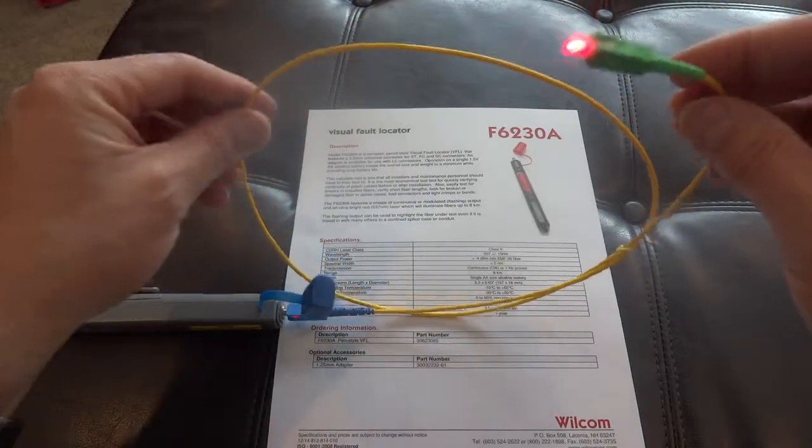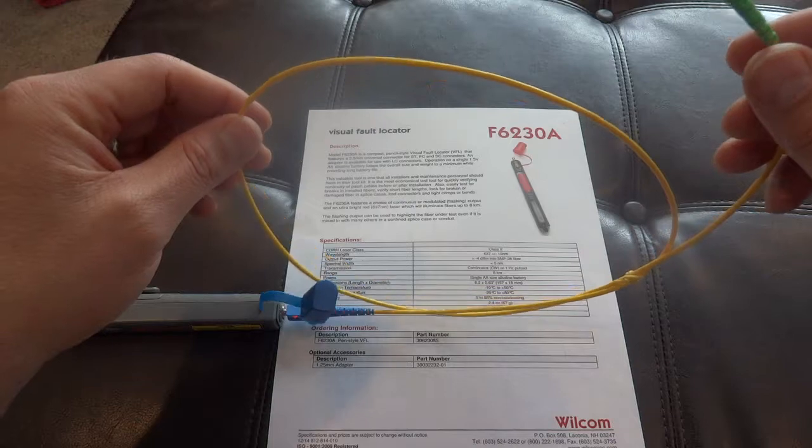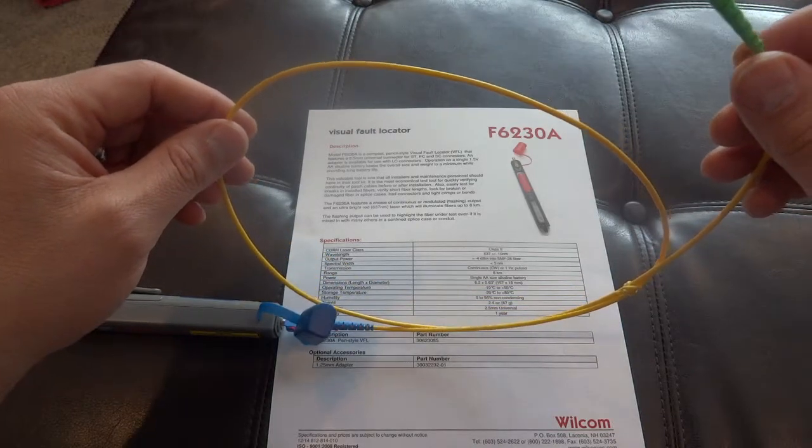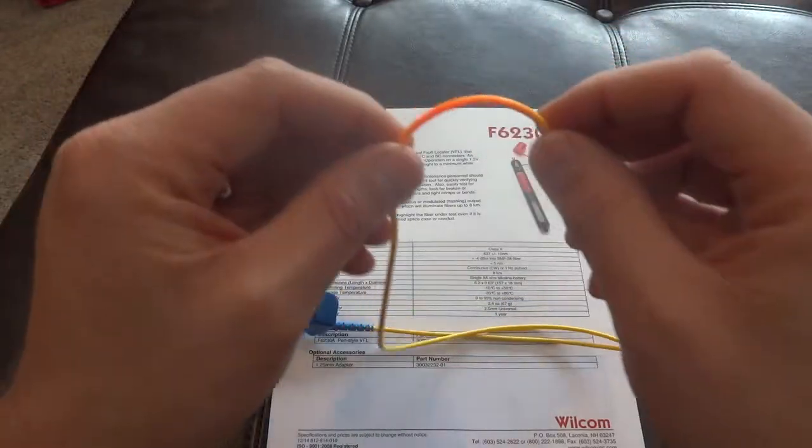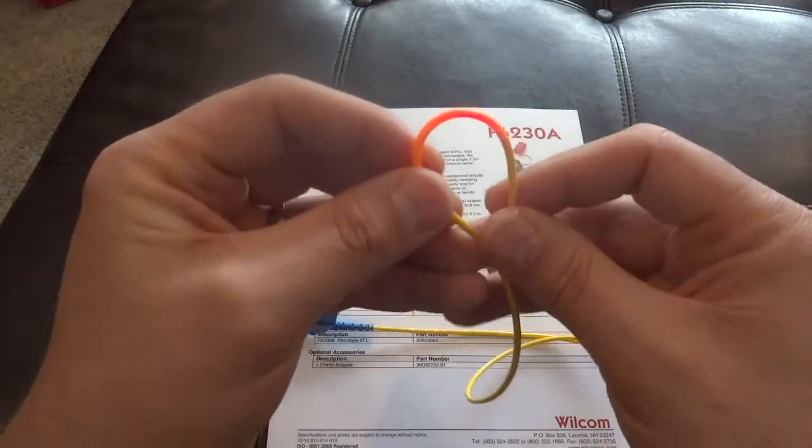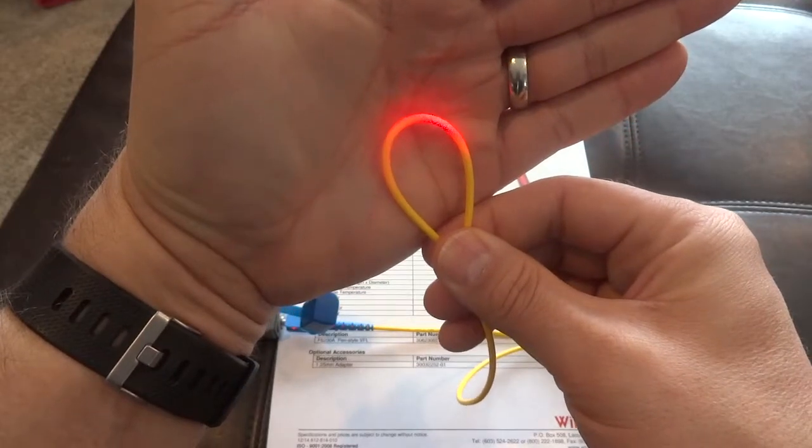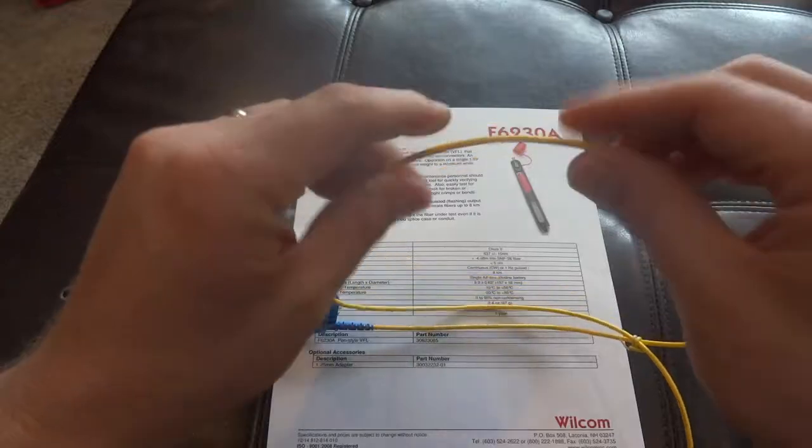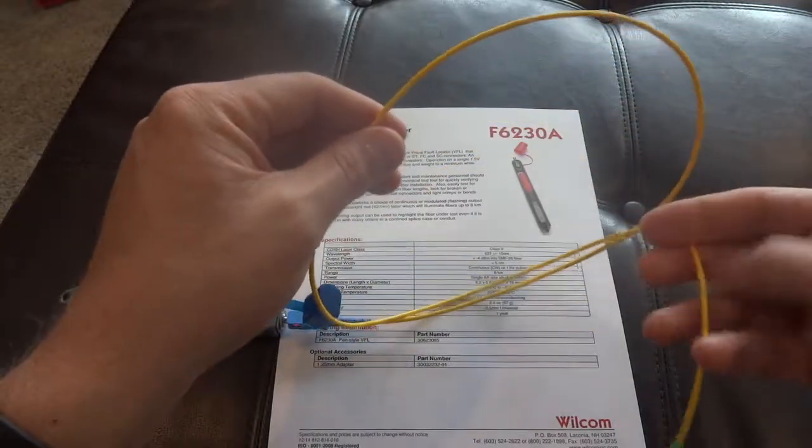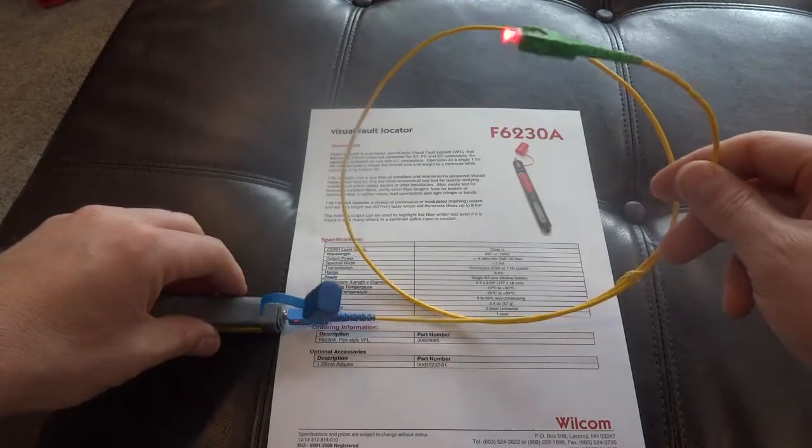One thing you can also do is if you're in a data room or IDF and trying to track down a specific cable that goes from one side of the room to the other, you can actually bend this. You can bend it and see that it lights up. This has enough power to light that cable. If you've got a blue cable, it's tougher to see, but with some cable types, you can see them. You can obviously see the end of this. Again, don't look at the end.